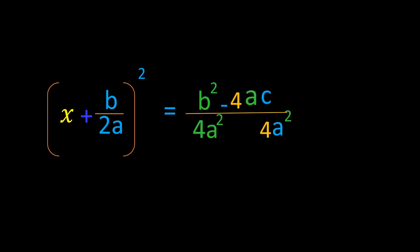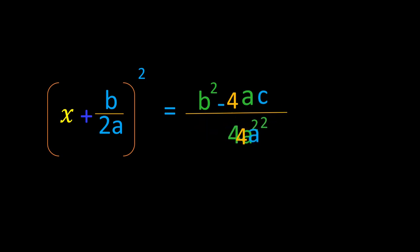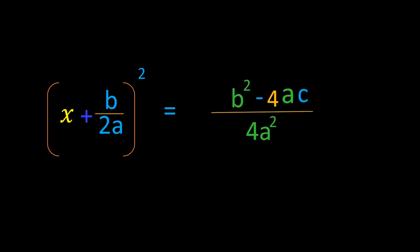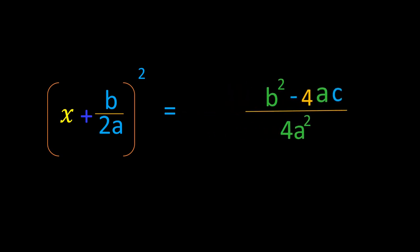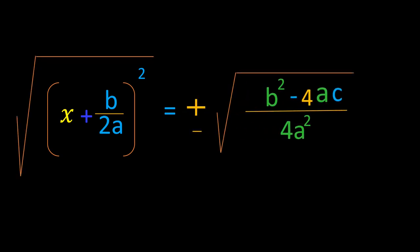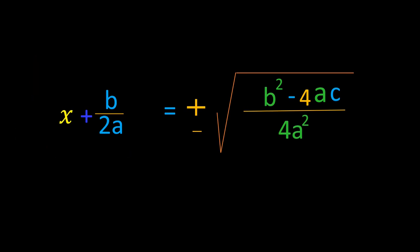Now simplify the RHS. Multiply and divide c over a by 4a to make the denominators the same. On simplification, we have b squared minus 4ac divided by 4a squared. To find the roots of the equation, let us take the square root on both sides. On the LHS, the square and the square root cancel.